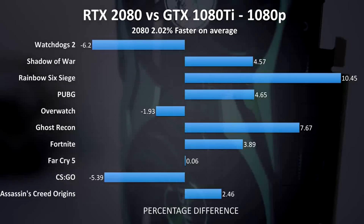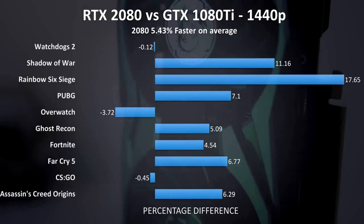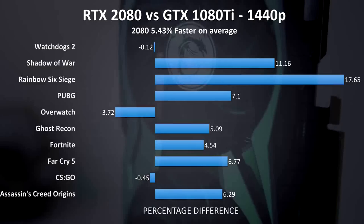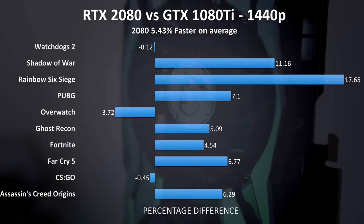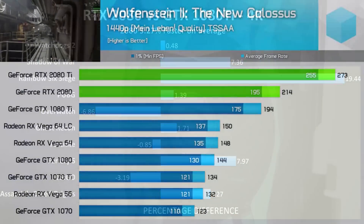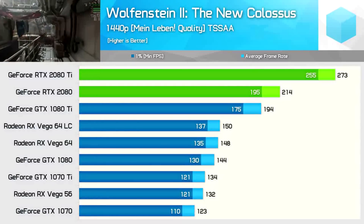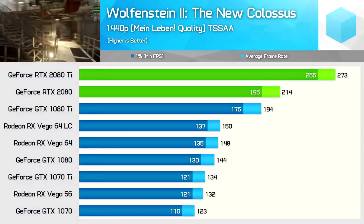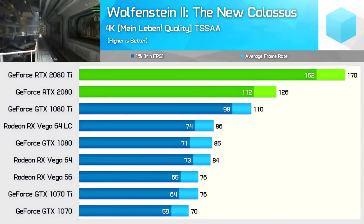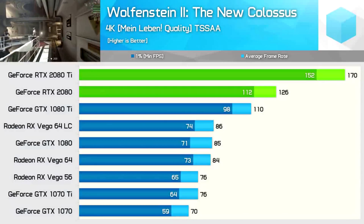That is not good. The 2080 really needed to be the same price or cheaper. It uses less power, which is something, but it's just not enough to justify the premium. The 2080 Ti, on the other hand, is a different story performance-wise — it pulls a 30-40% gap over both the 2080 and the 1080 Ti, which is huge. However, the price is ridiculous — it's basically twice the price of a 1080 Ti and nearly twice the price of a 2080.